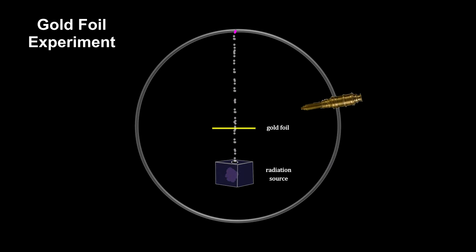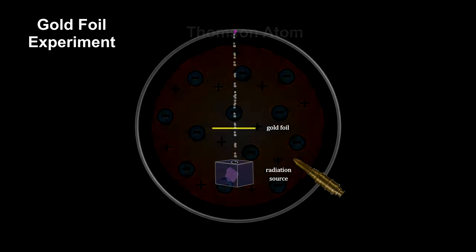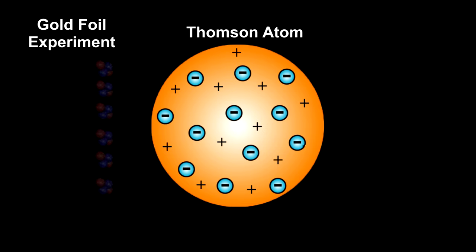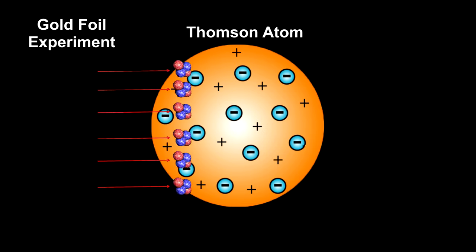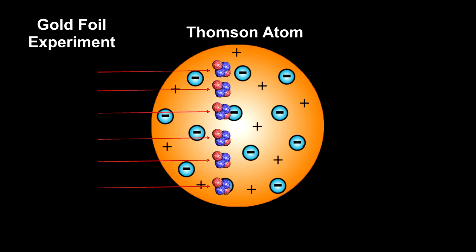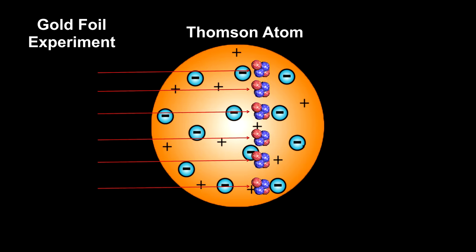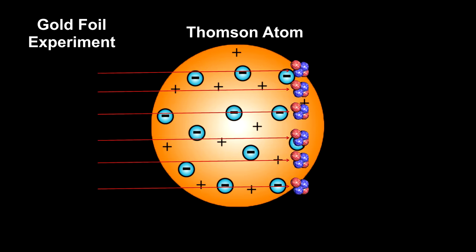A microscope swivels to view all scattering angles. If the Thomson model was correct, the positively charged alpha particles would pass through the distributed and therefore diluted positive charge in the gold atoms with little or no deflections.